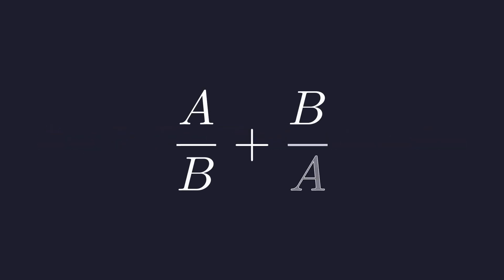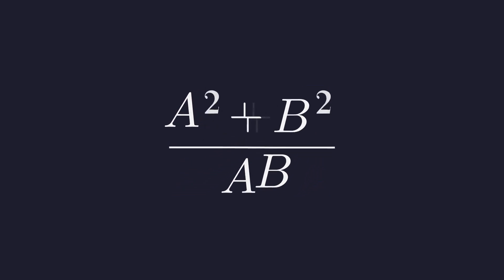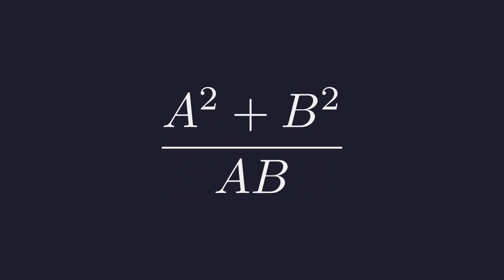We need to evaluate A over B plus B over A. Finding a common denominator of AB. This gives us A squared plus B squared over AB. We already know the denominator. AB is 5. So we just need to find A squared plus B squared.